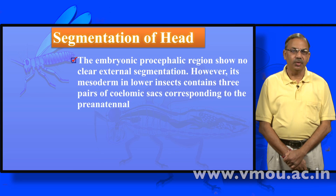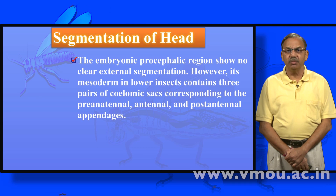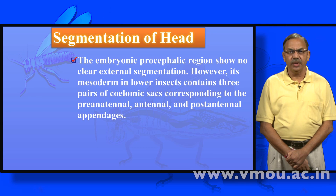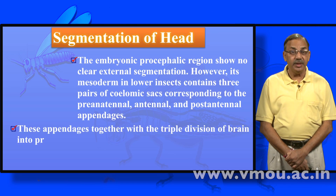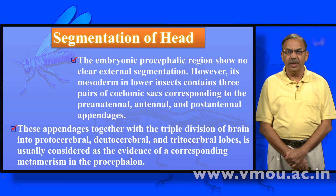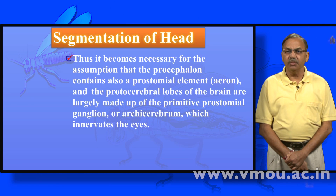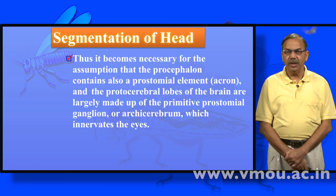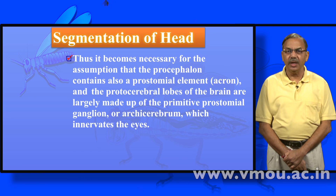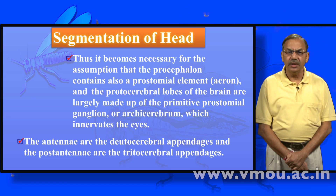Regarding the segmentation of the head — the procephalon — we should understand what the procephalon is. The embryonic procephalic region shows no clear external segmentation. However, its mesoderm in lower insects contains three pairs of coelomic sacs corresponding to the pre-antennal, antennal, and post-antennal appendages. These appendages, together with the triple division of the brain into proto-cerebral, deuterocerebral, and trito-cerebral lobes, is usually considered as evidence of corresponding metamerism in the procephalon. The antennae are the deuterocerebral appendages, and the post-antennal appendages are the trito-cerebral appendages.